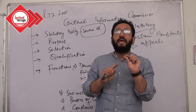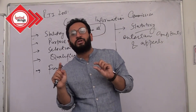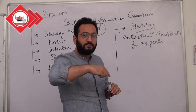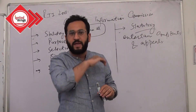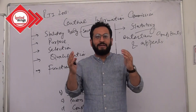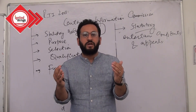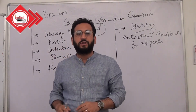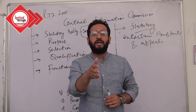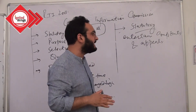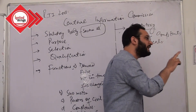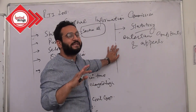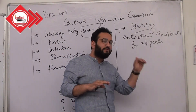Along with the CIC, the act also says there shall be a State Information Commission for each and every state, which will do the same work at the state level that the CIC does at the centre. Because we are a federal setup — with a constitutional division of powers between the centre and the states per the 7th Schedule (Union List, State List, Concurrent List) — we require bodies at both levels: CIC at the centre and State Information Commissions at the states.